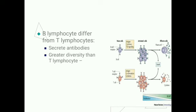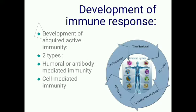How do B lymphocytes differ from T lymphocytes? First, B lymphocytes secrete antibodies that pass through humors; therefore the immunity is known as humoral immunity. Second, B lymphocytes have greater diversity than T lymphocytes — meaning B lymphocytes form antibodies with different specific reactivity.